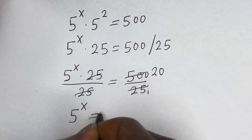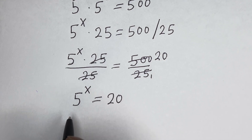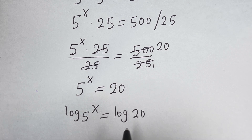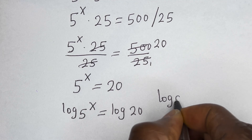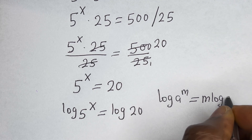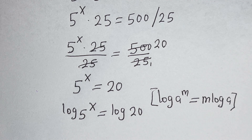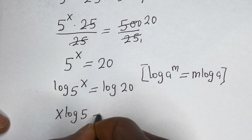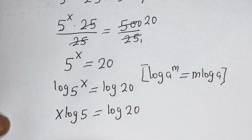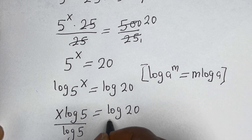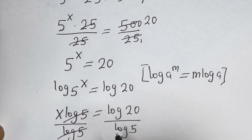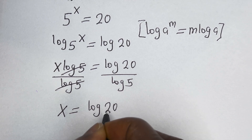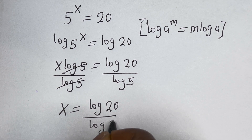5 raised to power s is equal to 20. Let us take the log on both sides of this equation. Log 5 raised to power s is equal to log 20. If you have log a raised to power m, this is equal to m log a. Then s log 5 is equal to log 20. Let us divide both sides by log 5. Log 5 cancels, so s is equal to log 20 divided by log 5.